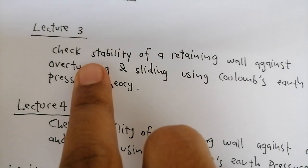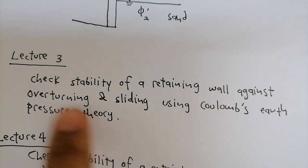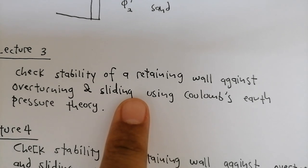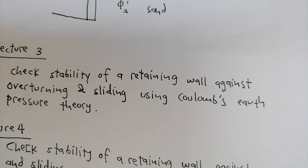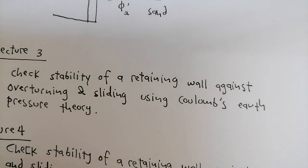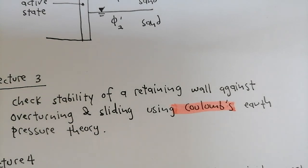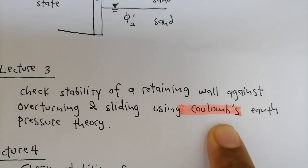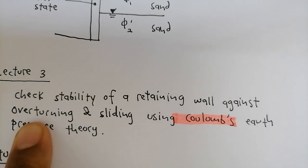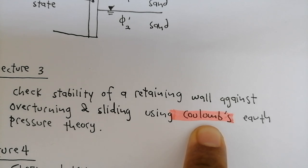In Lecture Session 3, we started to check the stability of the retaining wall against overturning and sliding, but we used Coulomb's Earth Pressure Theory. So Lecture 3 used Coulomb.